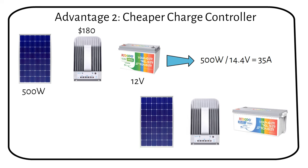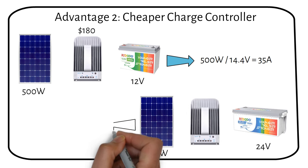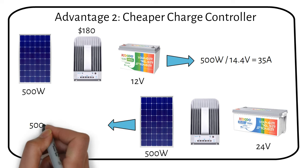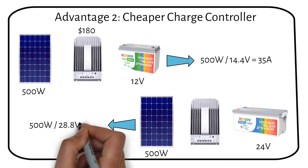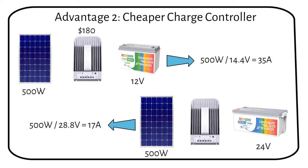Now if we increase the battery voltage to 24 volts, we get 500 watts divided by 28.8 volts equals 17 amps. A 20 amp EPever Tracer will cost you $120, $60 cheaper than if we were to use a 12 volt battery.